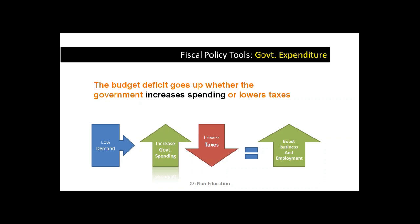But if you lower the taxes and increase government expenditure, there could be a big budget deficit — because revenues will become less if you reduce taxes, and expenditures are high. So lower income plus higher expenditure leads to a higher budget deficit. In that situation, the government might need to take a loan by issuing government bonds to the public, or to the Fed Reserve or the RBI. This has to be very well balanced.